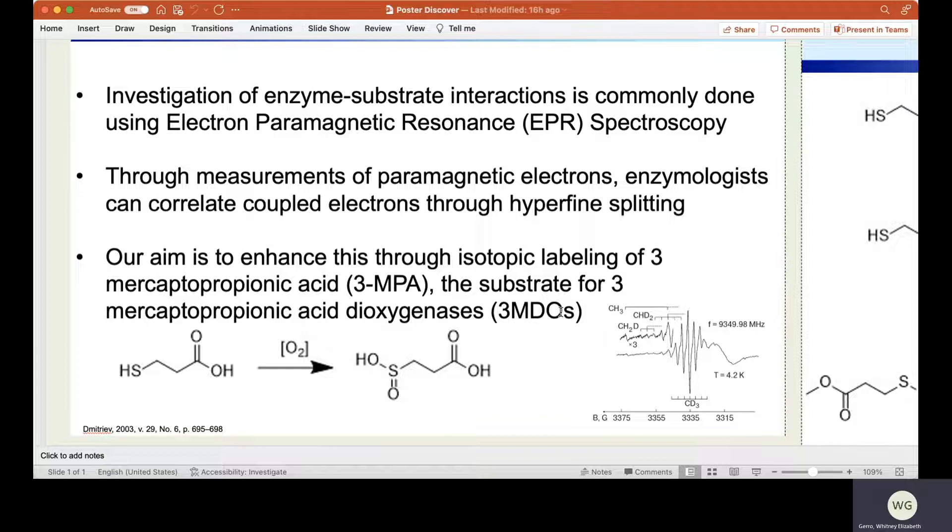In our case, electrons are close to the binding site and coupled with iron, producing multiple signals in the spectrum. Our aim is to enhance the interaction we see via isotopic labeling of 3 MPA.